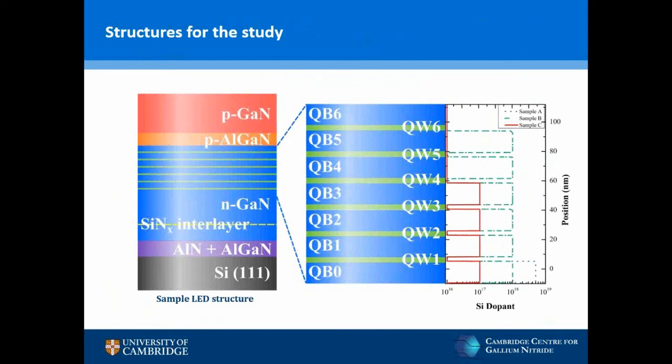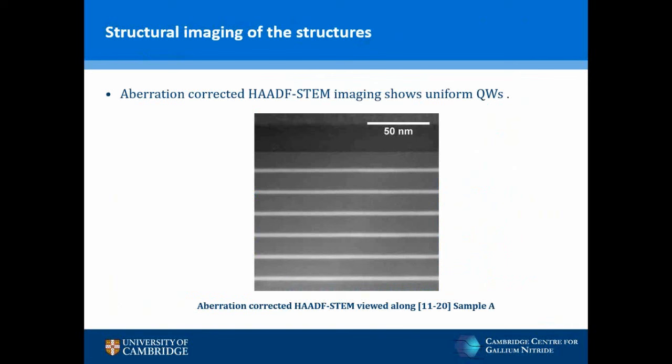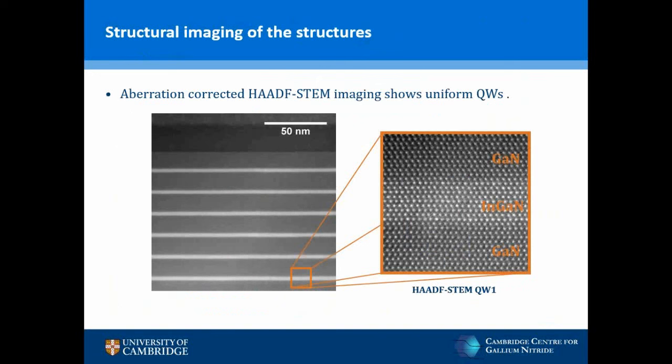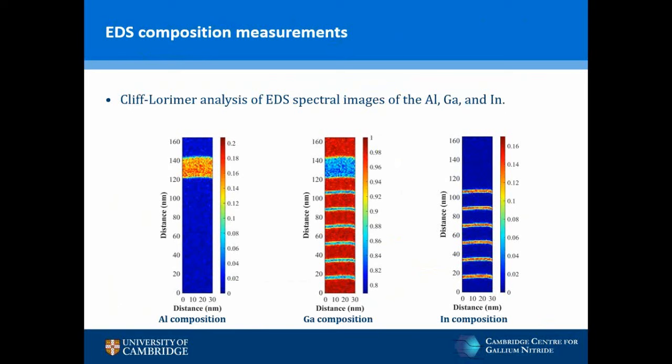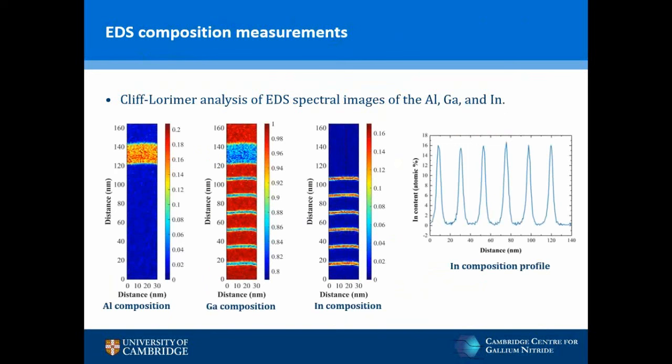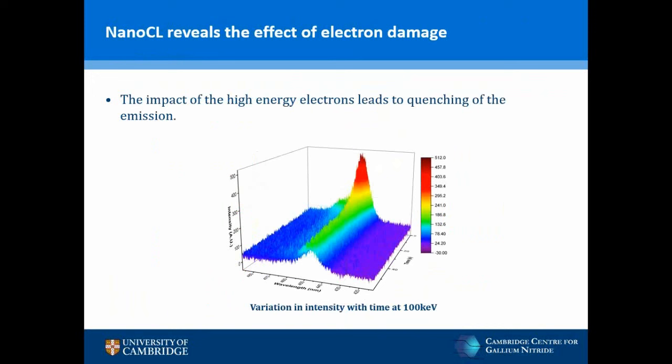The second sample had constant barrier doping of 1×10¹⁸ per cm³, whilst the final sample was doped with 1×10¹⁷ per cm³ or less, essentially close to non-intentional doping levels. Before performing the nanoCL analysis, we characterised the samples by aberration-corrected STEM imaging, which showed that each quantum well has the same thickness across all samples. Energy dispersive X-ray spectrum imaging also showed uniform composition across the quantum wells of all three samples, confirming there is no variation in emission wavelength due to compositional or structural differences.